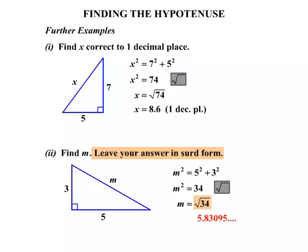So in other words, where we've written the square root of 34, that is in fact surd form. So we're going to leave our answer as such.